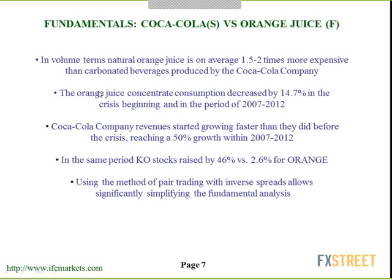Another example is the mixed spread of competitive assets: stocks of Coca-Cola and futures of frozen orange juice concentrate. In volume terms, natural orange juice is on average 1.52 times more expensive than Coca-Cola beverages. Orange consumption decreased by 14% during the crisis period of 2007–2012, while Coca-Cola revenues grew faster than before the crisis, reaching 50% growth within 2007–2012. Comparing the growth of cola stock price and orange concentrate futures shows the situation more sharply — cola stock rose by 46% whereas orange rose by only 2%.